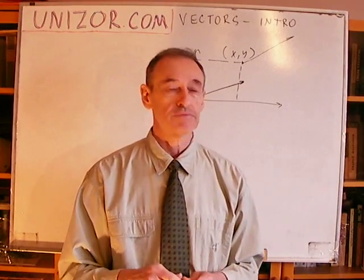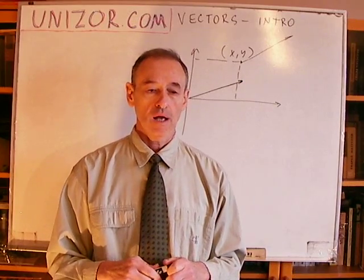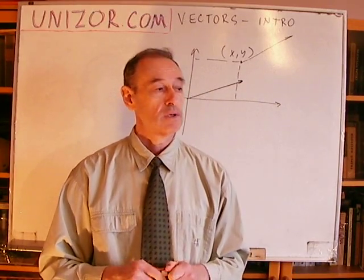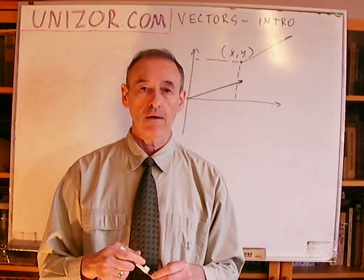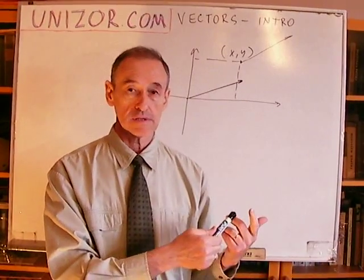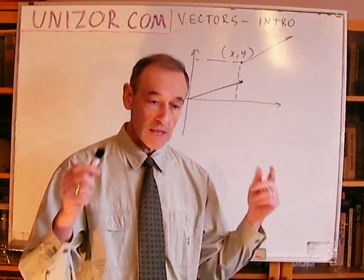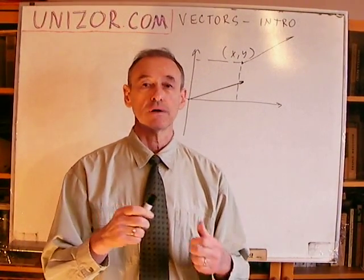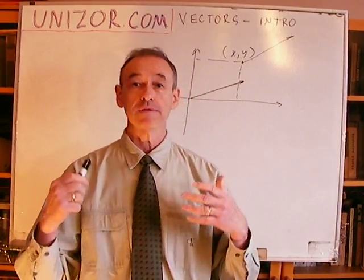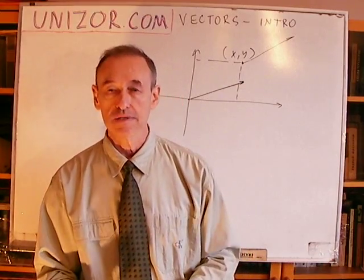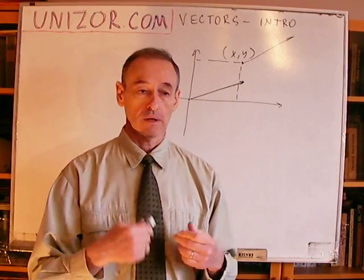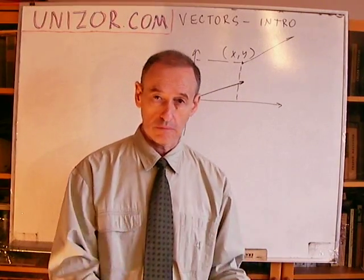As a final example before completing this introductory lecture, it's about the special theory of relativity — Einstein's creation — where the space where things take place is four-dimensional. It's three dimensions of our Euclidean coordinate system plus time. So you have four parameters characterizing the position of something in this world: time and three spatial parameters. There is a special geometry there and vectors exist there as well, since these parameters are changing, including time.